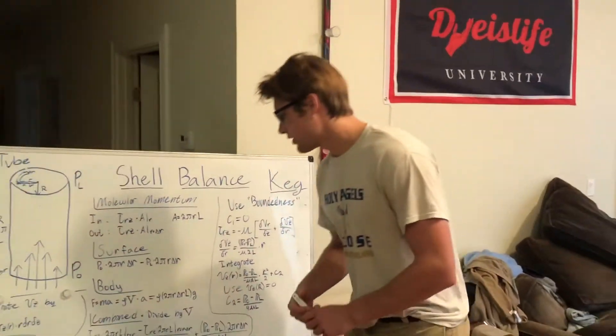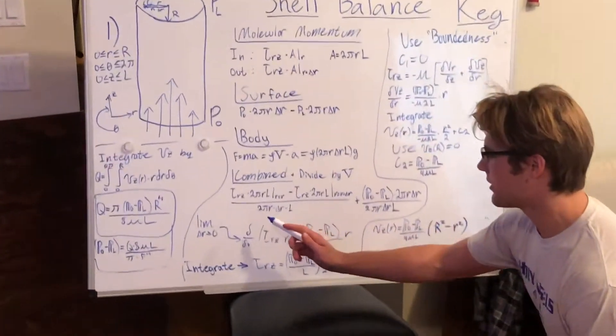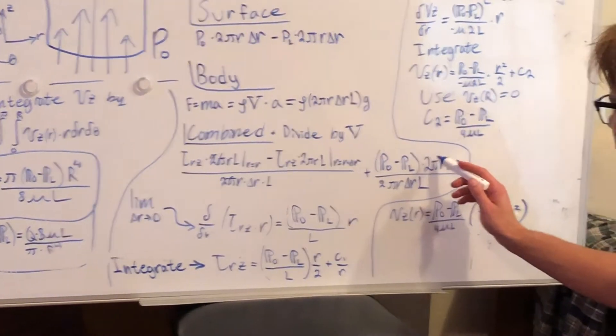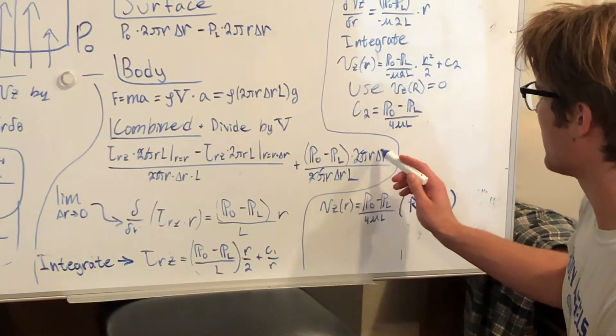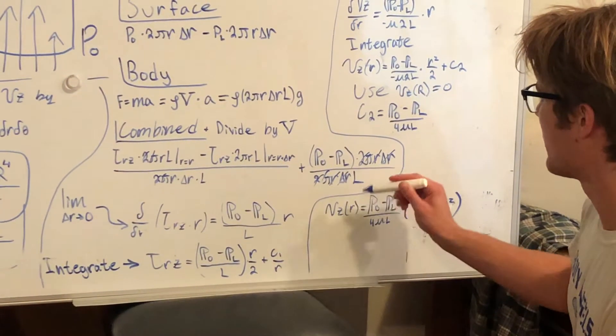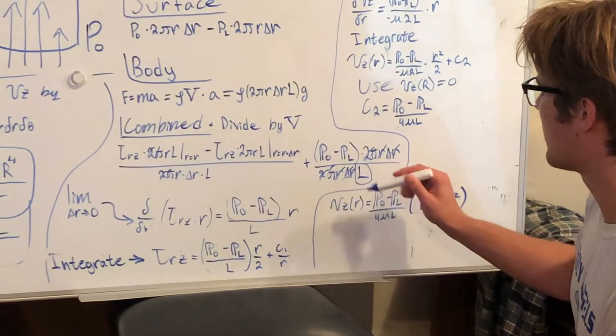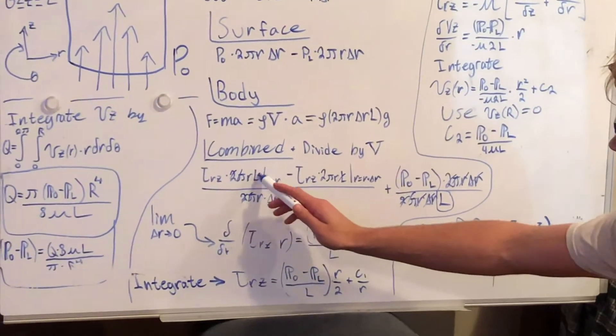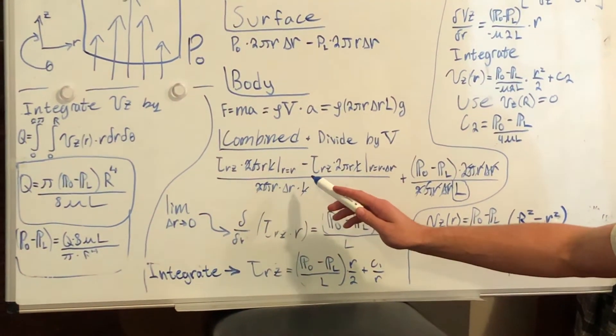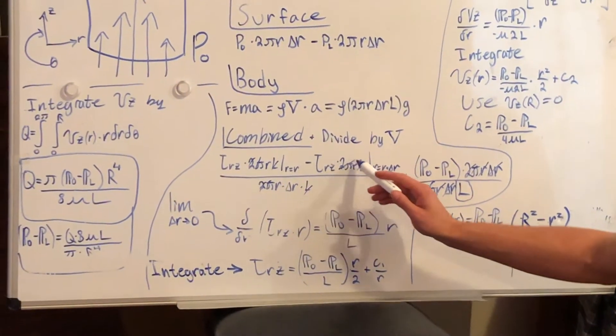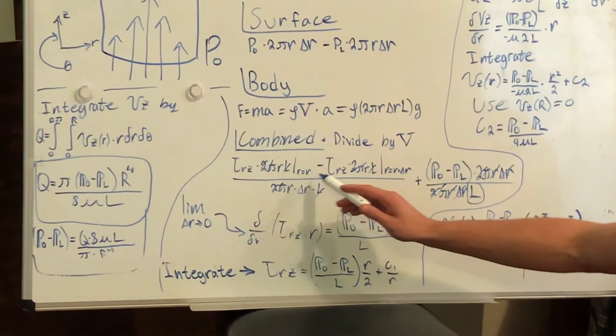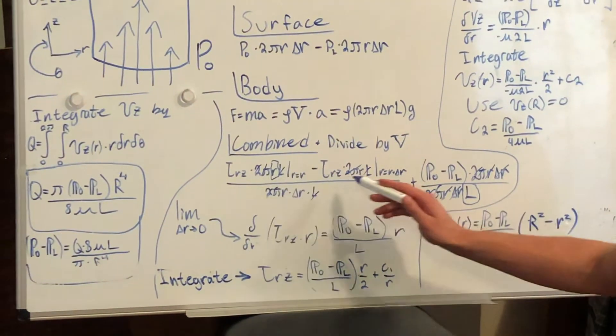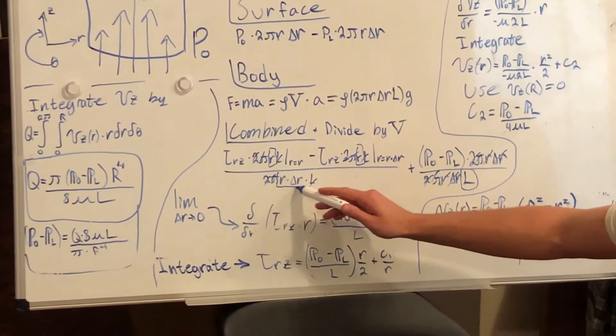So now, if we combine, we can cancel out many different parts of this equation, such as 2π over here and 2π over there. As well, over here we can cancel out r dr, r dr, which leaves behind L on the bottom over here. And over here we can cancel out L. But we can't cancel out r because it is being evaluated at different positions, where here r equals r, and here r is r plus dr. So those r's stay behind, and this r times dr stays behind.